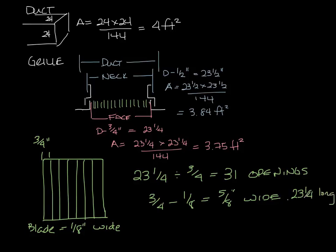So now the area that you can see through this grill, if you will, is five eighths times 23 and a quarter divided by 144 times the 31 openings, which is 3.13 square feet.